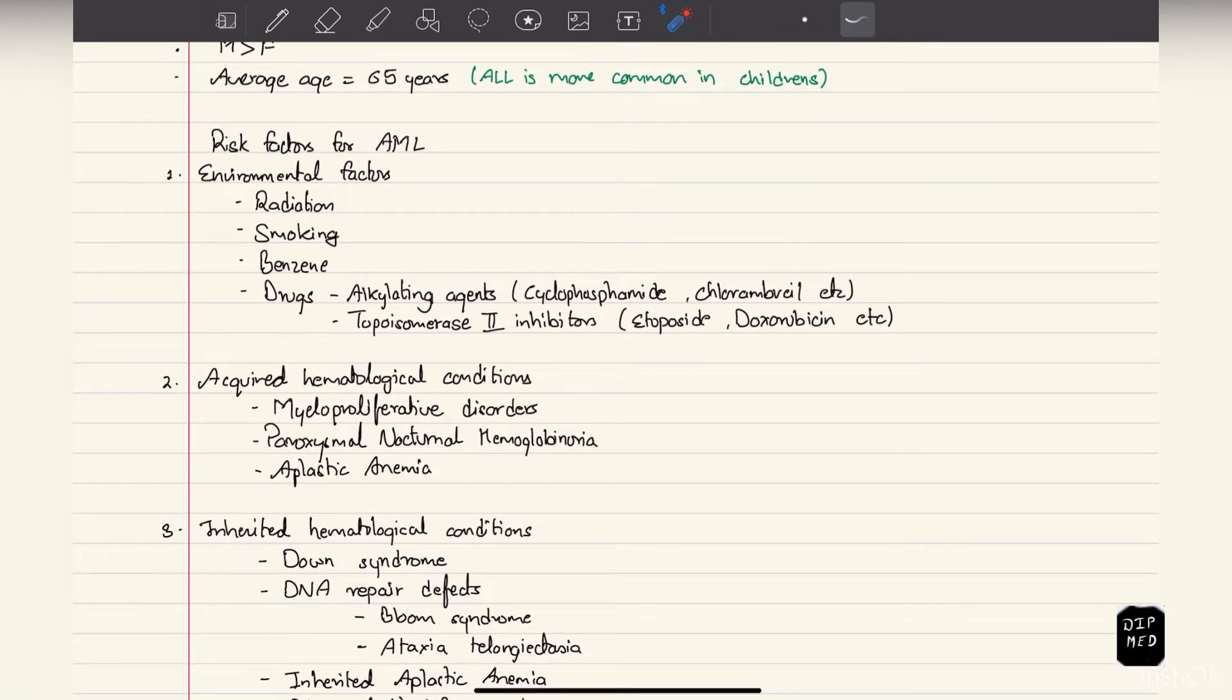Coming on to the risk factors for AML: under environmental factors we have radiation, especially ionizing radiations, smoking, benzene, and drugs such as alkylating agents which include cyclophosphamide, chlorambucil, etc., and topoisomerase 2 inhibitors such as etoposide, doxorubicin, etc.